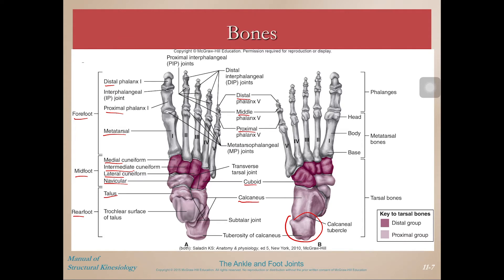Traveling out to the forefoot, the metatarsals are analogous to the metacarpals of your hand. The toes are similar to the fingers: the great toe has only a distal and proximal phalanx, whereas the other toes have a distal, middle, and proximal phalanx. The toe joints share nomenclature with the fingers: MP or metatarsophalangeal joints, DIP or distal interphalangeal joints, and PIP or proximal interphalangeal joints. The mid and rear foot are comprised of tarsal bones, analogous to the carpal bones of the wrist, though larger and load-bearing.